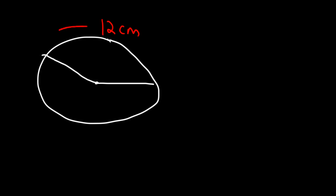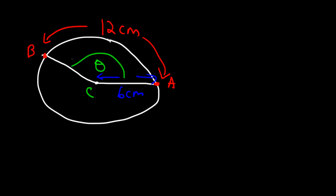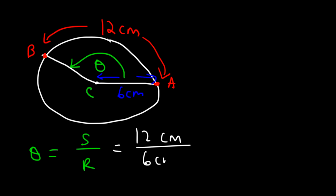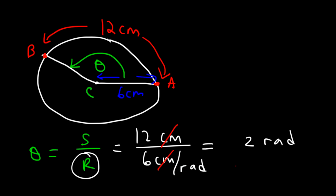Let's say we have a circle where the arc length is 12 centimeters — that's the distance between points A and B — and point C is the center of the circle. The radius is 6 centimeters. To find angle theta, divide the arc length by the radius: 12 centimeters divided by 6 centimeters per radian gives you 2 radians. The units of centimeters cancel, leaving radians.